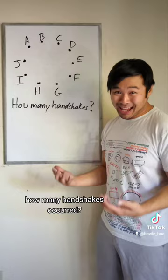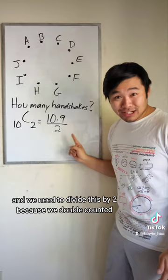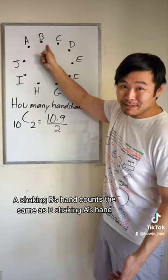Now, this is essentially the same question. We're basically asking how many pairs are here? Now, there are 10 people shaking nine hands each. And we need to divide this by two, because we double counted. A shaking B's hand counts the same as B shaking A's hand.